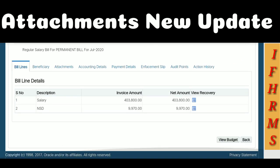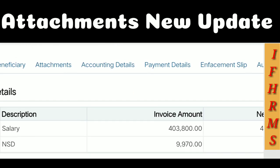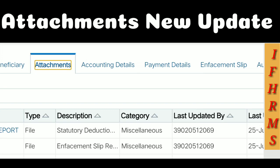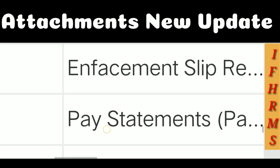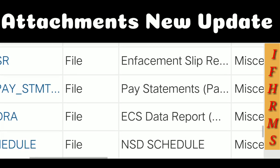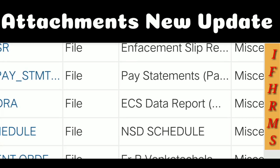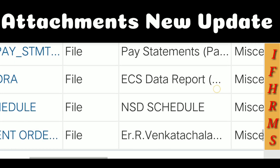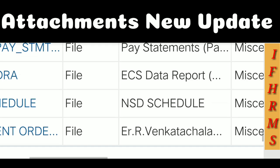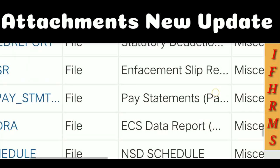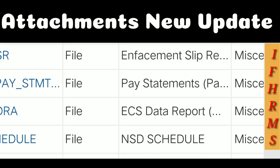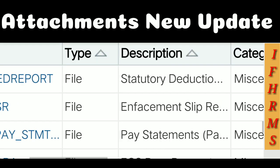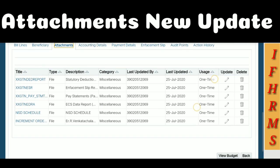You can check the details and the bill line. If you have an attachment, you can see what you have in the draft. First of all, you can see the Enfacement, Pay Statement, and ECS Statement. You can also attach it to the NSD Schedule. If you have an ECS Statement, you can also attach it to the NSD Schedule.